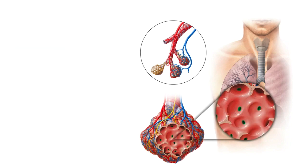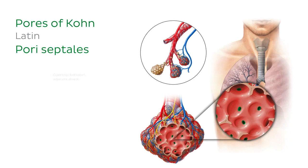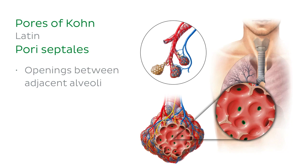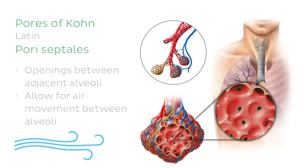The final structure related to the bronchial tree are the pores of Kohn, also known as inter-alveolar connections, which we can now see highlighted in green. These are openings situated between adjacent alveoli that allow for air movements between adjoining alveoli, enabling direct communication between adjacent alveoli.